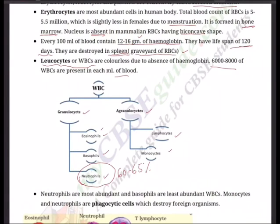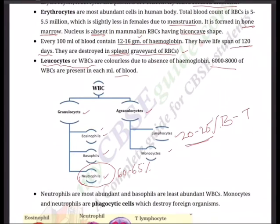Eosinophils are 2 to 3 percent and resist infections; they are also associated with allergic reactions. There is a condition called eosinophilia — normally eosinophils should be 2 to 3 percent, but in some people due to infection or hypersensitivity, the number goes up to 8 to 10 percent, causing dry cough and chest pain. Lymphocytes constitute 20 to 25 percent of WBCs. There are two major types — B cells (bone marrow cells) and T cells (thymus cells) — responsible for immune responses of the body.